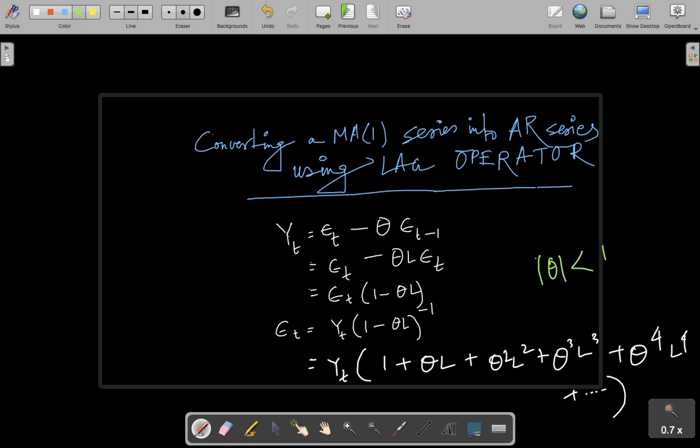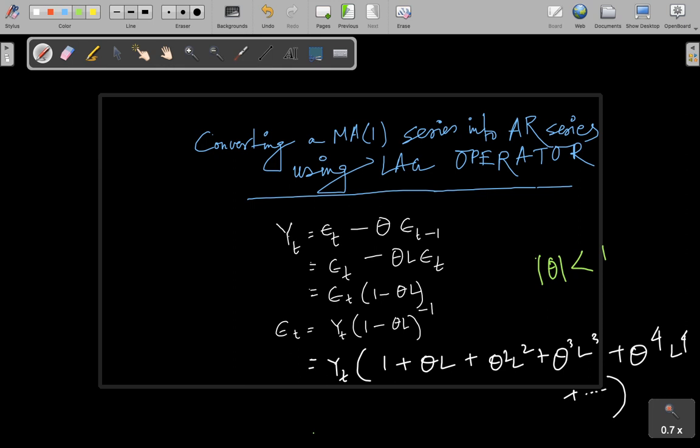Now we are not taking L into account separately because L is an operator. Let me actually use the lag operator here and see how I get the value of ε_t. It will basically be Y_t, then using one lag operator I get θY_{t-1}, then θ²Y_{t-2}, θ³Y_{t-3}, and so on.